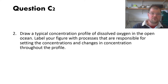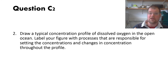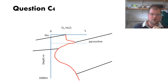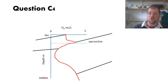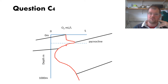Moving on to question two: this asked you to draw a concentration profile of dissolved oxygen in the open ocean and label it with the processes that are changing those concentrations. The graph should have a correctly labelled oxygen concentration axis with values, and a depth axis starting from zero. It would also be relevant to plot the pycnocline — the boundary between the surface layer and the deep ocean.